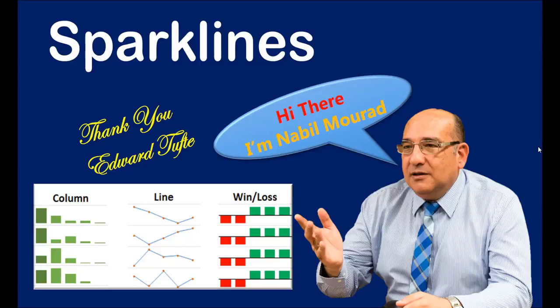Hi there, I'm Nabil Mourad. A chart is a graphic representation of numeric values. When we create a chart in Excel, it doesn't live in a cell like the text and numbers we type. A chart is a floating object on top of the grid. You can move it, you can resize it, you can do so many things with that chart.